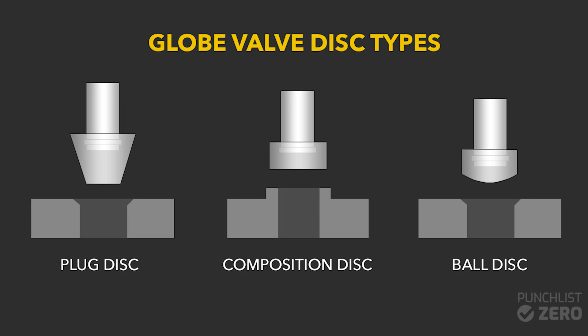Cast iron globe valves typically see a disc and seat ring made of bronze. Heavier duty carbon steel and stainless steel valve bodies have trim material that is usually stainless steel, which provides resistance to galling and seizure.